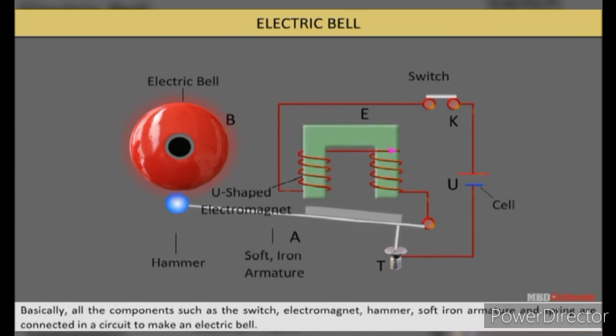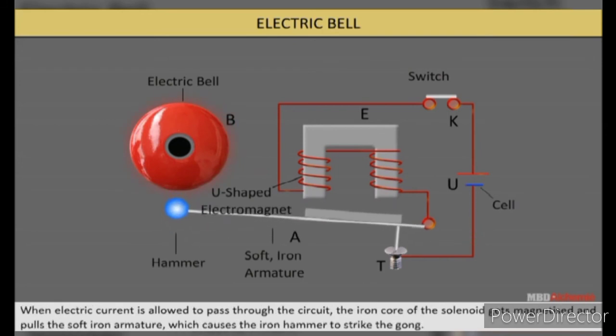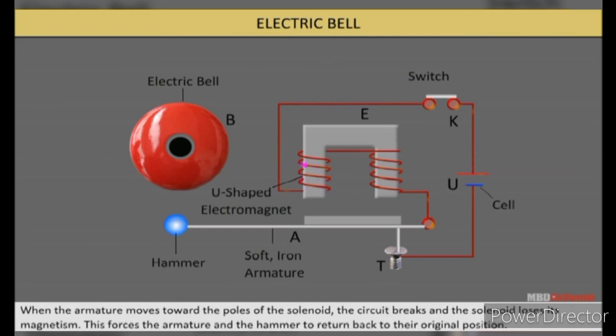Basically, all the components such as the switch, electromagnet, hammer, soft iron armature, and spring are connected in a circuit to make an electric bell. When electric current is allowed to pass through the circuit, the iron core of the solenoid gets magnetized and pulls the soft iron armature, which causes the iron hammer to strike the gong. When the armature moves toward the poles of the solenoid, the circuit breaks and the solenoid loses its magnetism. This forces the armature and the hammer to return back to their original position.